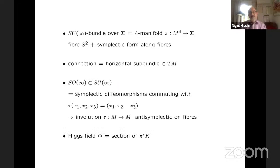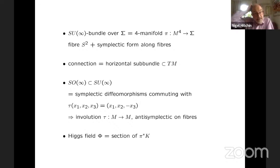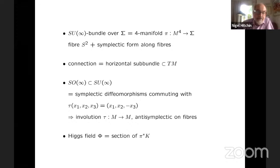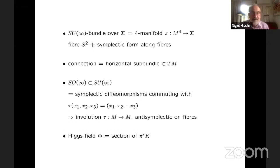Given that we understand SU(∞) as the symplectic diffeomorphisms of the two-sphere, what is a connection on an SU(∞) bundle? Geometrically, we have to think of having a four-manifold fibering over the surface sigma whose fiber is a two-sphere. What we want is a symplectic form on the two-sphere, a symplectic form along the fibers. So that's what an SU(∞) bundle is — it's a bundle whose structure group is the diffeomorphisms of the two-sphere, and we have a symplectic structure, so we can reduce the structure group to the symplectic diffeomorphisms.